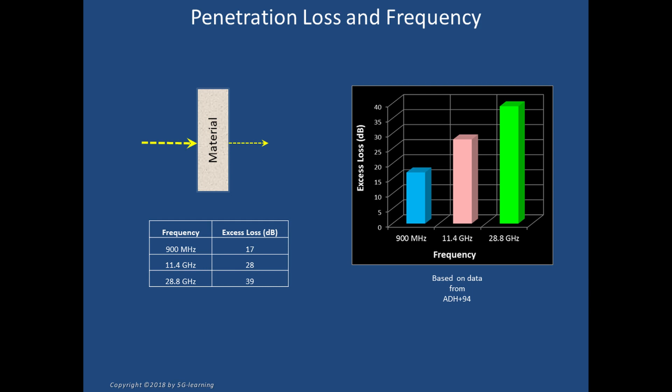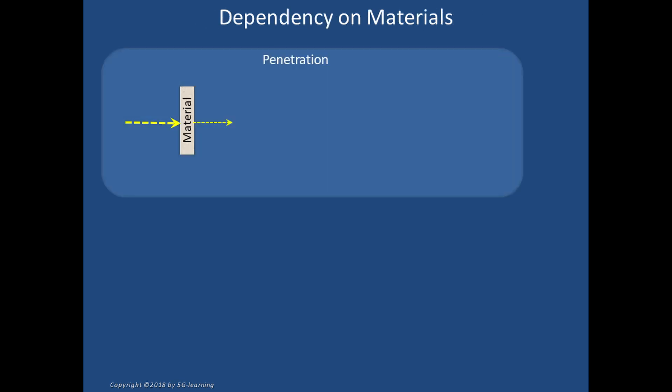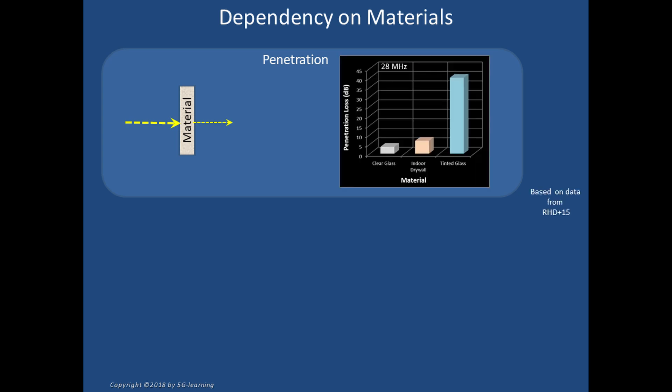Penetration losses not only depend on carrier frequency; the type of material strongly influences the level of these losses as well. At 29 gigahertz, for example, the penetration loss due to clear glass and drywall, two typical indoor materials, are relatively modest, on the order of 5 dB's. But for tinted glass, as used in the windows of most office buildings, it climbs to around 40 dB's.